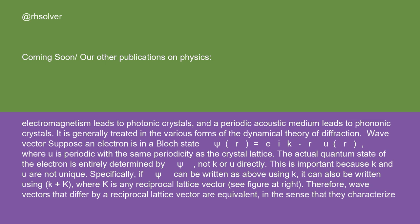Wave vectors. Suppose an electron is in a Bloch state psi(r) = e^(ik·r) u(r), where u is periodic with the same periodicity as the crystal lattice. The actual quantum state of the electron is entirely determined by psi, not k or u directly. This is important because k and u are not unique.